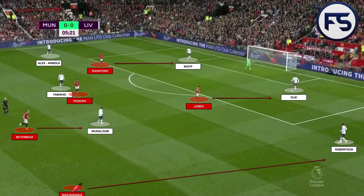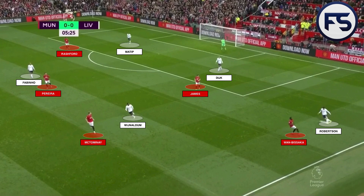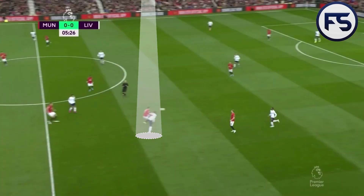Another example: when the ball comes to Van Dijk, James jumps onto him, Wan-Bissaka jumps to Robertson, Metomene with Finaudrum, Fabinho with Pareda, Rashford on Matip — leaving Alexander-Arnold on his own. A little further along those players have jumped into position, and when the ball comes into the middle Manchester United are able to intercept it.